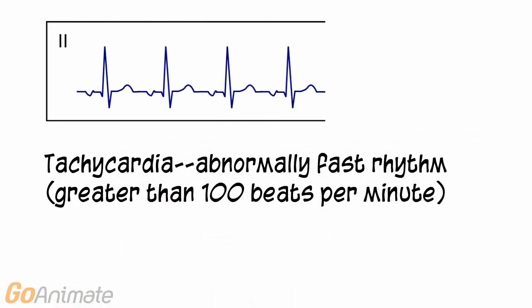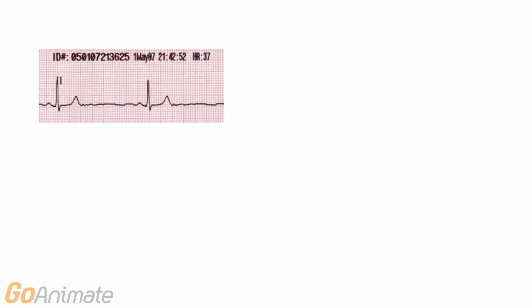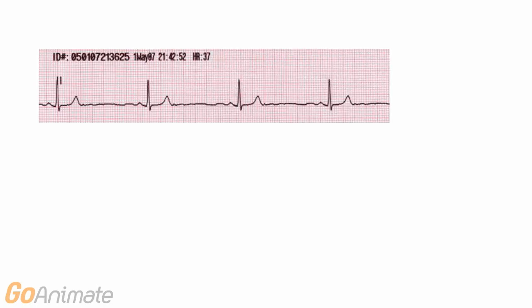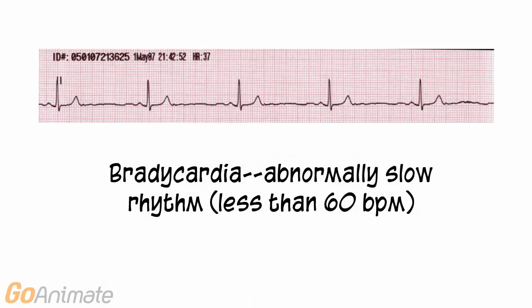Tachycardia is an abnormally fast heart rhythm, usually greater than 100 beats per minute. Likewise, bradycardia is an abnormally slow heart rate, usually less than 60 beats per minute.